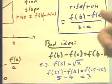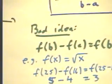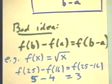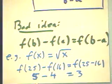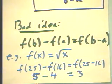So let's look at the first bad idea. The first bad idea is to say that F of B minus F of A equals F of B minus A. Now, that's a real bad idea.